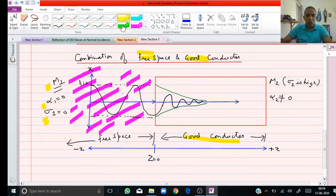Similarly, in this case for medium 2, as it is a good conductor, its conductivity is very high. This means its alpha 2 is not equal to 0. There will be some attenuation in case of medium 2, the good conductor.